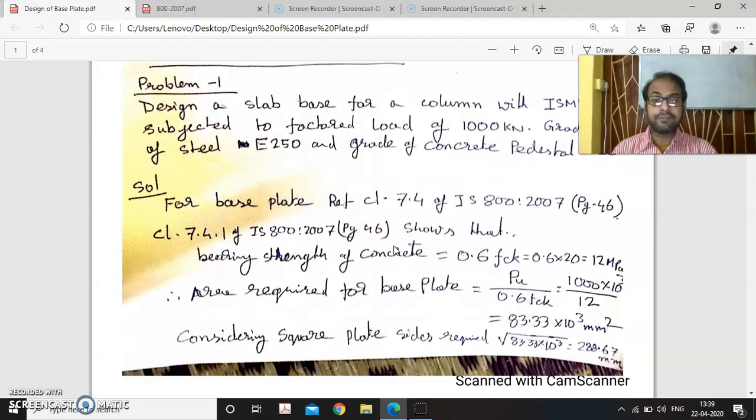So first of all, we have calculated the bearing strength of the concrete base plate, which is coming as 0.6 FCK equals to 20 N per millimeter square, equals to 12 MPa. Now to find out the area required of the base plate, we have divided the axial load by this permissible bearing pressure, and it is coming as 83.33 × 10³ millimeter square. We have multiplied by 10³ to convert it to Newton.